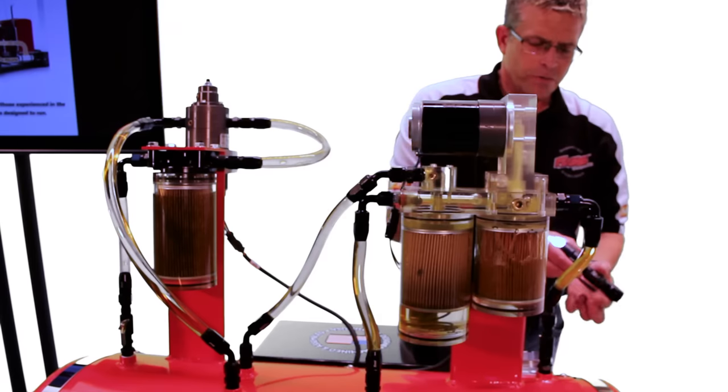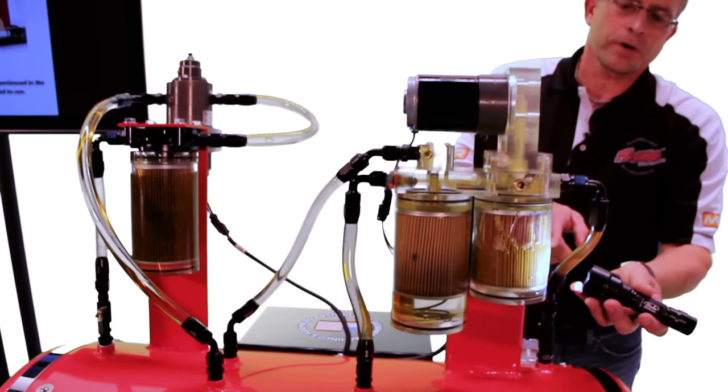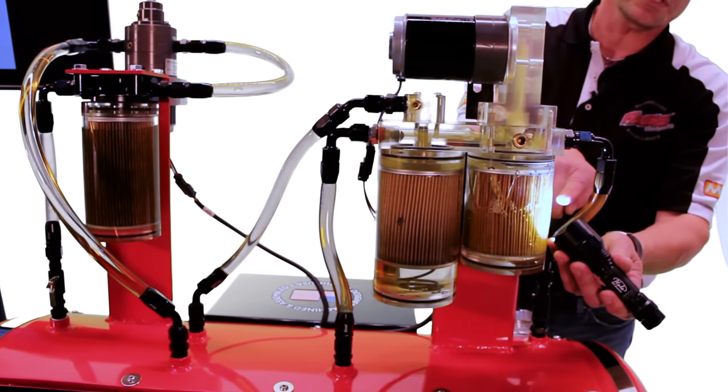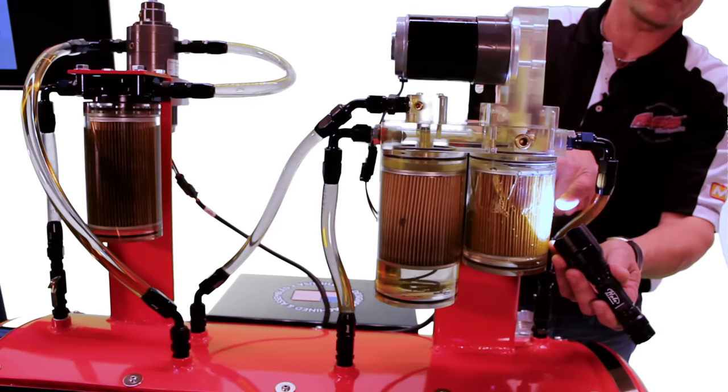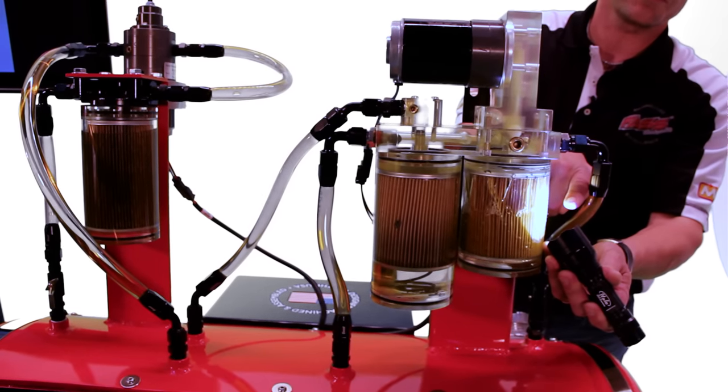We have the suction side over here going up through the water separator. The water is being separated out here. You can also see the air gap just like we had on the stock suction side filtration system.